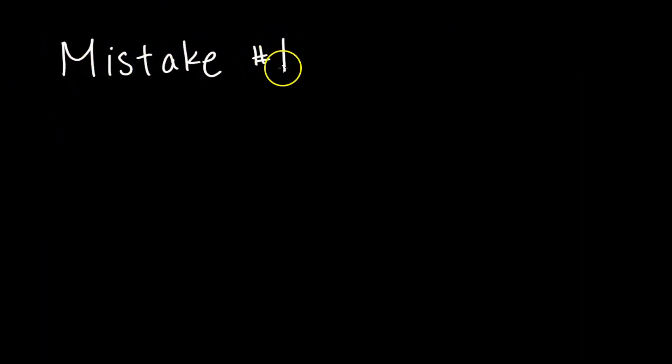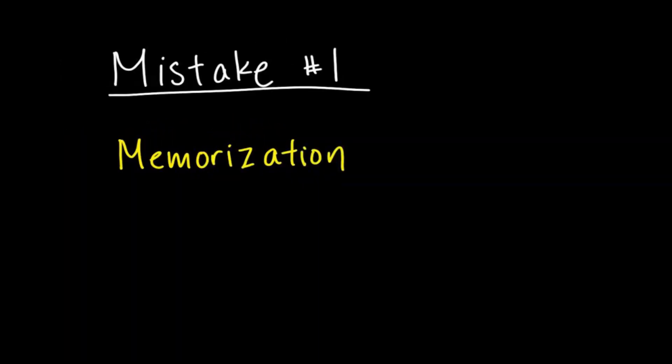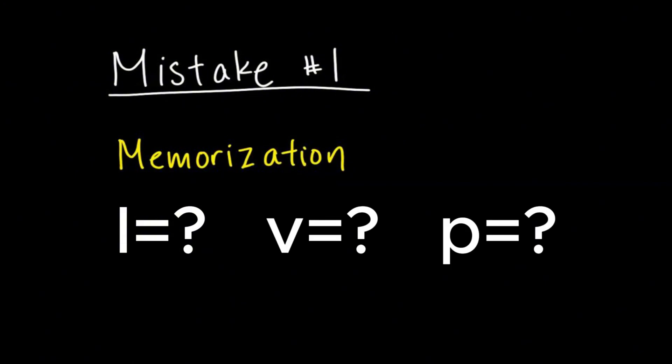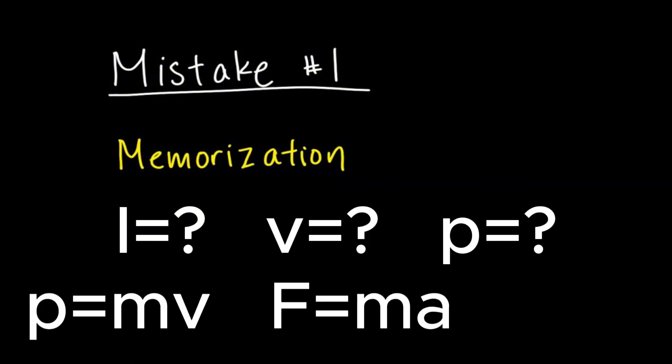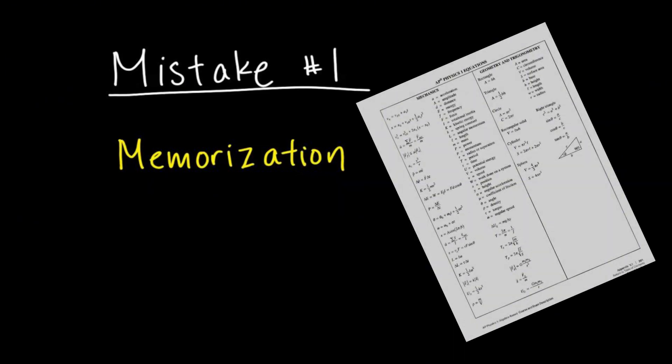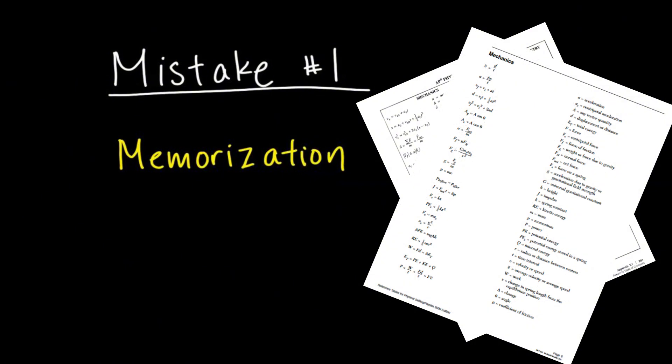The first biggest mistake is that students think they can learn physics simply by memorizing formulas. The problem with this approach is that you still need to know what each variable represents, how to use them, and when you can use that formula. In fact many instructors and the AP physics exam will provide a sheet of equations for the physics test, but students who simply memorize won't know which equations to use.